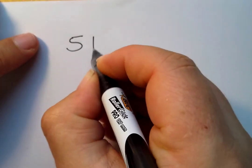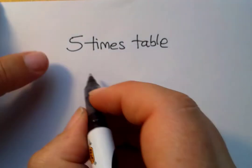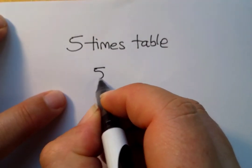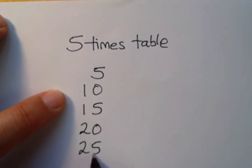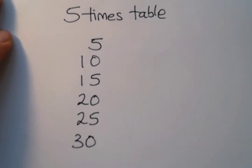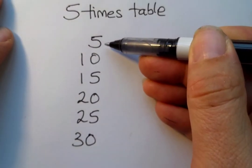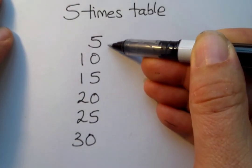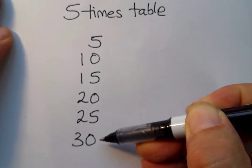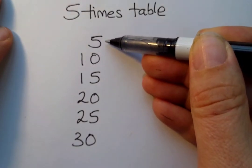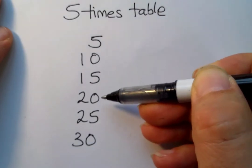We're looking at the five times table. I'm going to write it down: five, ten, fifteen. What do you notice to start with? Can you see that the ones digit goes from five to zero, to five to zero? Every single number in the five times table either ends with a ones digit of five or zero — five or zero, five or zero.